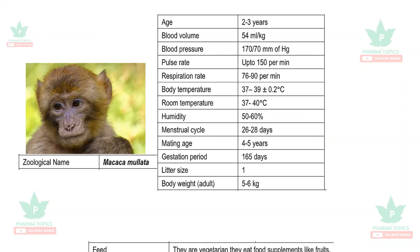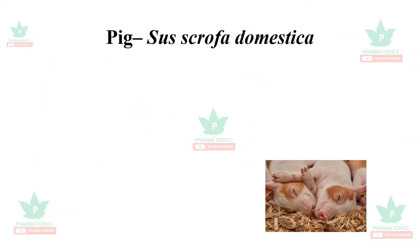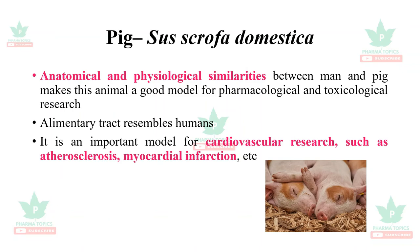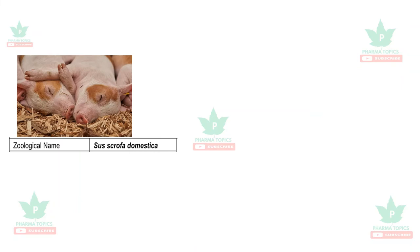The pig, Sus scrofa domestica, has anatomical and physiological similarities to humans, making it a good model for pharmacological and toxicological research. The alimentary tract is an important model for cardiovascular research such as atherosclerosis and myocardial infarction.